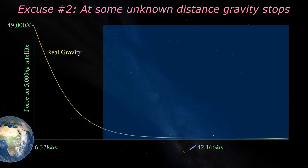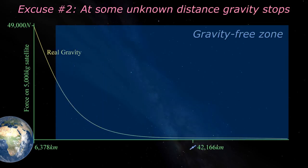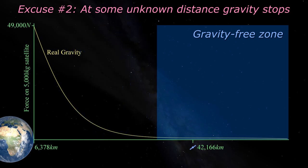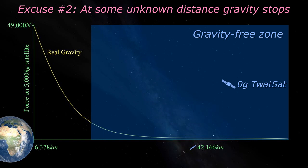The second excuse for geostationary satellites is that gravity drops off to zero close to Earth, meaning that you can just put a satellite up in space and leave it there. As you do.